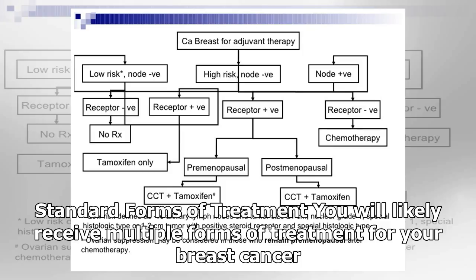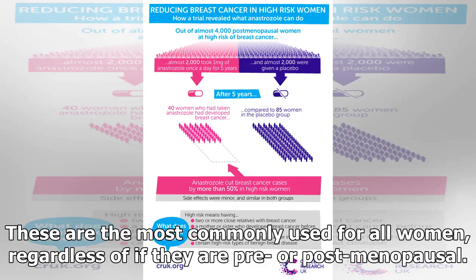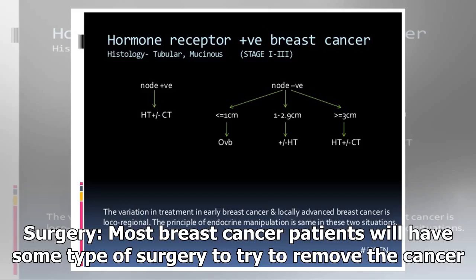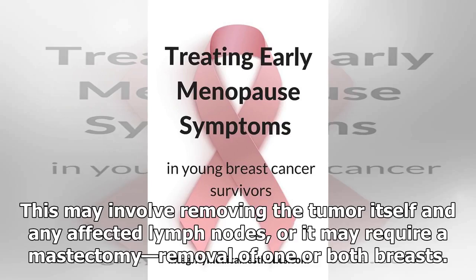You will likely receive multiple standard forms of treatment for your breast cancer, used for all women regardless of whether they are pre- or post-menopausal. Most breast cancer patients will have some type of surgery to try to remove the cancer. This may involve removing the tumor itself and any affected lymph nodes, or it may require a mastectomy — removal of one or both breasts.